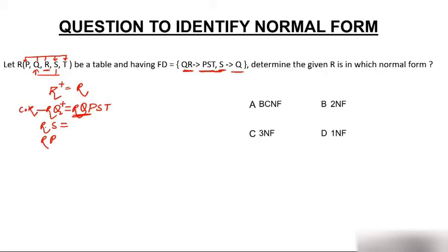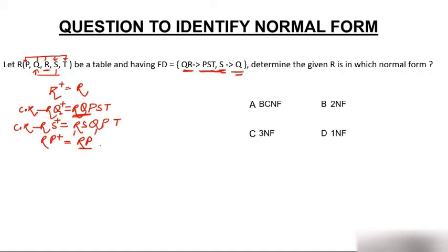Now checking RP: the closure of RP has RP. With QR I can determine PST but I don't have QR; with S I can determine Q but I don't have S. So RP determines only RP — this is not a candidate key. We have only two candidate keys: RQ and RS.